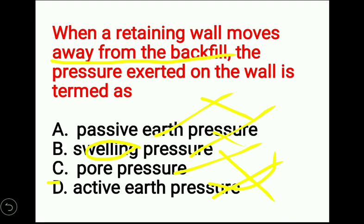According to the question, the correct answer is option D - active earth pressure. When a retaining wall moves away from the backfill, the pressure exerted on the wall is termed as active earth pressure. Please remember: passive means towards, active means away.